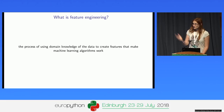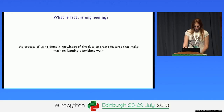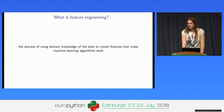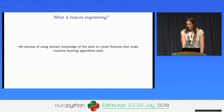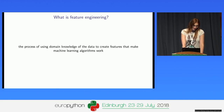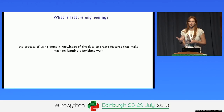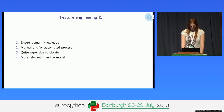According to Wikipedia, feature engineering is a process of using domain knowledge of the data to create features that make machine learning algorithms work. You've probably all heard the concept 'garbage in, garbage out' — meaning if you have garbage data that doesn't reflect the situation you're trying to work on, whatever model you come up with still won't produce good results. Feature engineering is the art of preparing data so that any algorithm can perform better.